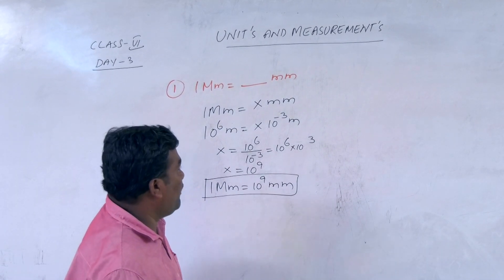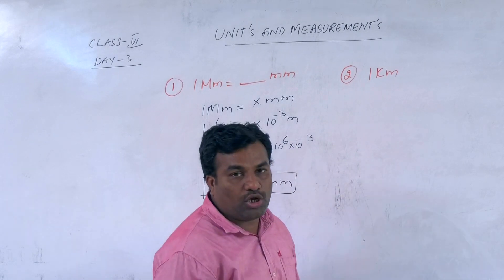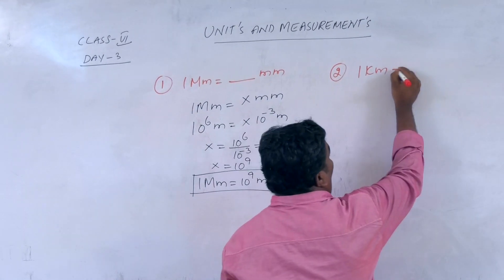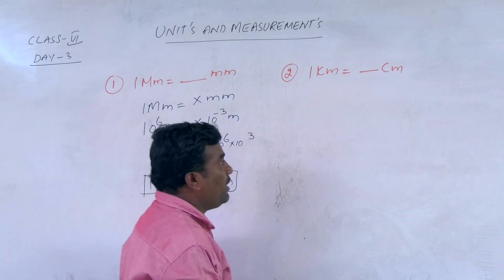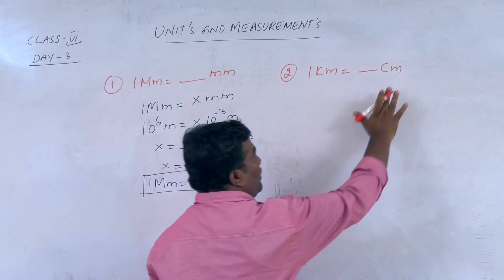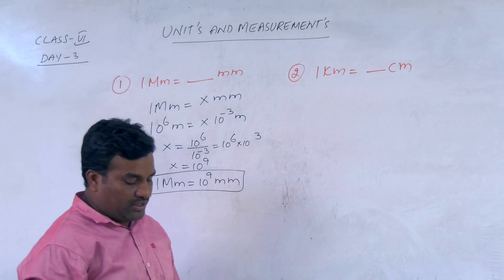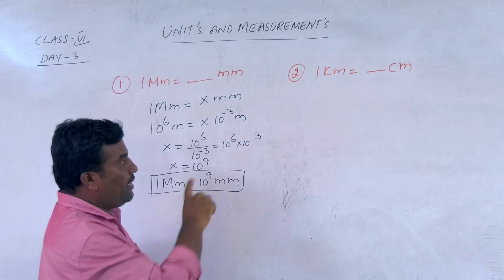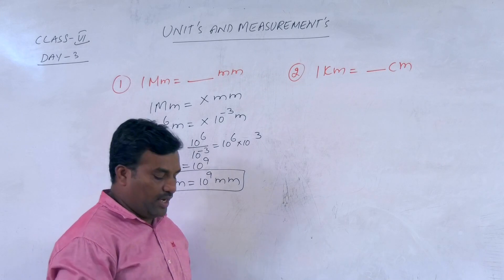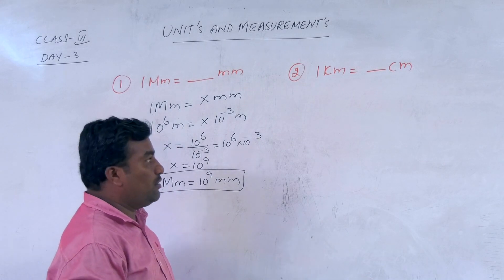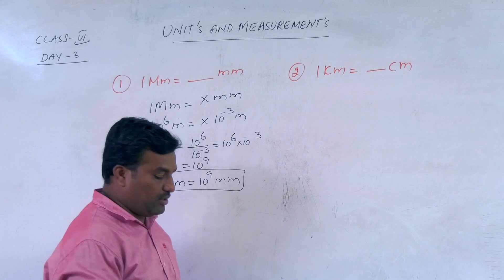Next, second question: 1 kilometre equals how many centimetres? Same approach — the given system of unit is converted to the SI system of unit.